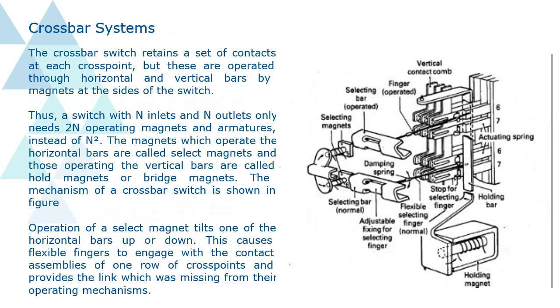Crossbar Systems. The crossbar switch retains a set of contacts at each crosspoint, but these are operated through horizontal and vertical bars by magnets at the sides of the switch.